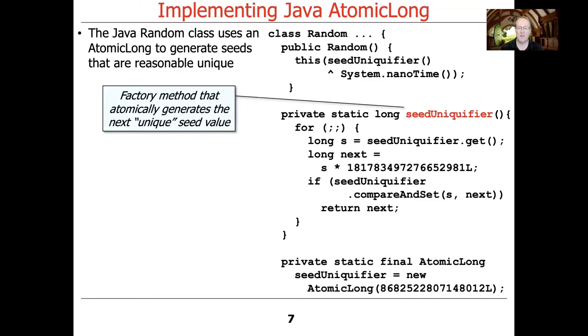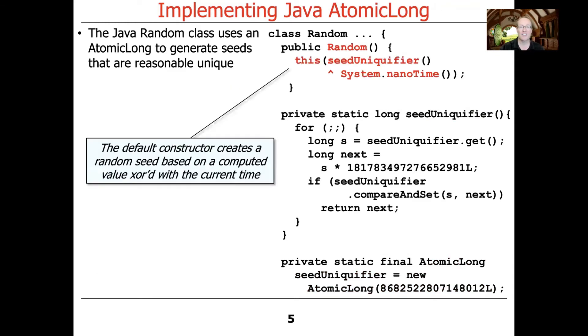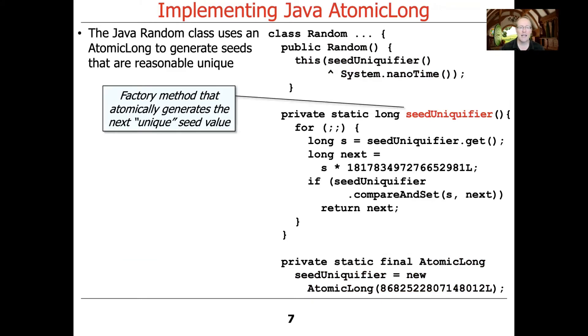And then we have this factory method. And this factory method, as you see, is what's called up here in the constructor of Random. It's going to automatically generate the next unique seed value. And let's take a look and see how that works.